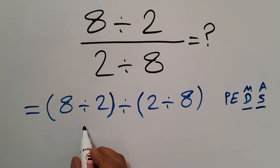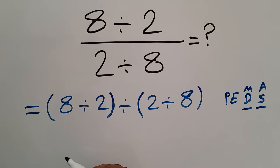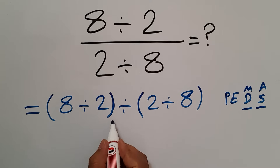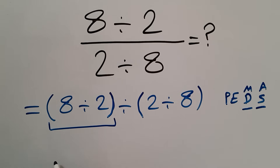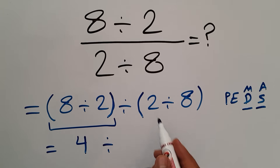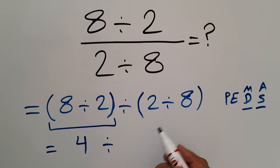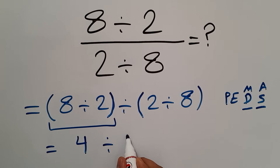So here, first we have to do parentheses. In these parentheses, we have 8 divided by 2. 8 divided by 2 gives us 4. So we have 4 divided by, and inside these parentheses, we have 2 divided by 8, or we can write 2 over 8.